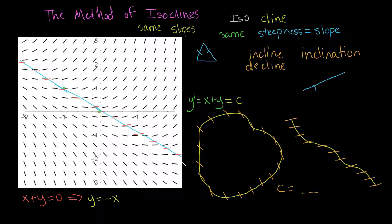Now what if we had chosen c equals 1 — all values where the slope is 1? We would have x plus y equals 1, or y equals 1 minus x. This is the same line but shifted up by 1. Drawing it in a slightly different color, connecting through the relevant points, we can see that all the little line segments on this isocline have a slope of about 1.